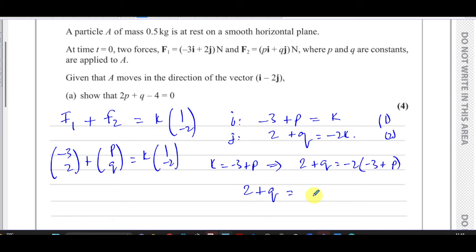We could have also made the coefficients the same and then added the two equations, but both of those ways are perfectly fine. So I've got 2 plus q is equal to 6 minus 2p.